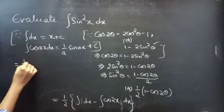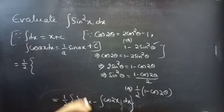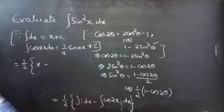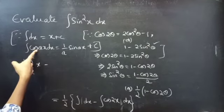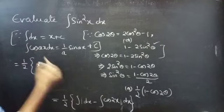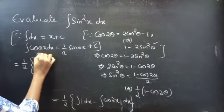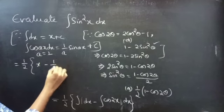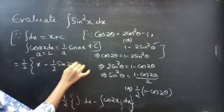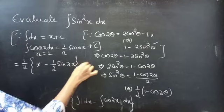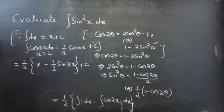Then this becomes 1 by 2 times x minus, comparing cos 2x with cos ax where a equals 2, we get 1 by 2 sin 2x plus c.